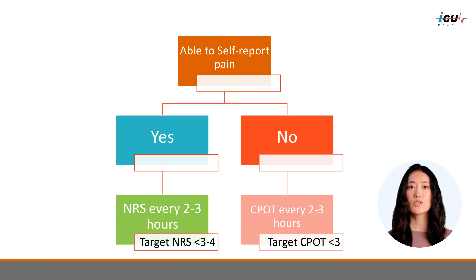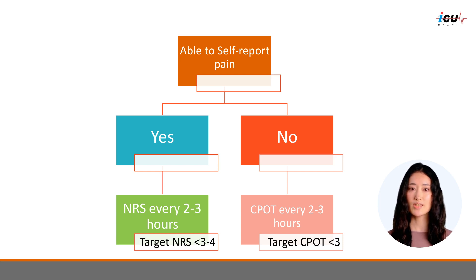In summary, clinicians should assess critically ill patients for their level of pain regularly, using self-report if possible. Pain should be reassessed every 2 to 3 hours and more frequently before painful procedures or mobilization. The numeric rating scale should be used in patients who can communicate; if the patient cannot communicate, one should use validated behavioral pain scales such as CPOT. Pain should be addressed with non-pharmacological methods or with medications if NRS is more than 3 or CPOT is more than 2. In the next step, we will discuss management of pain in the ICU.